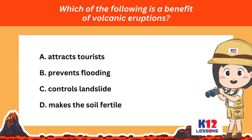Choose the letter of the correct answer. Which of the following is a benefit of volcanic eruptions? A. Attracts tourists. B. Prevents flooding. C. Controls landslide. D. Makes the soil fertile.